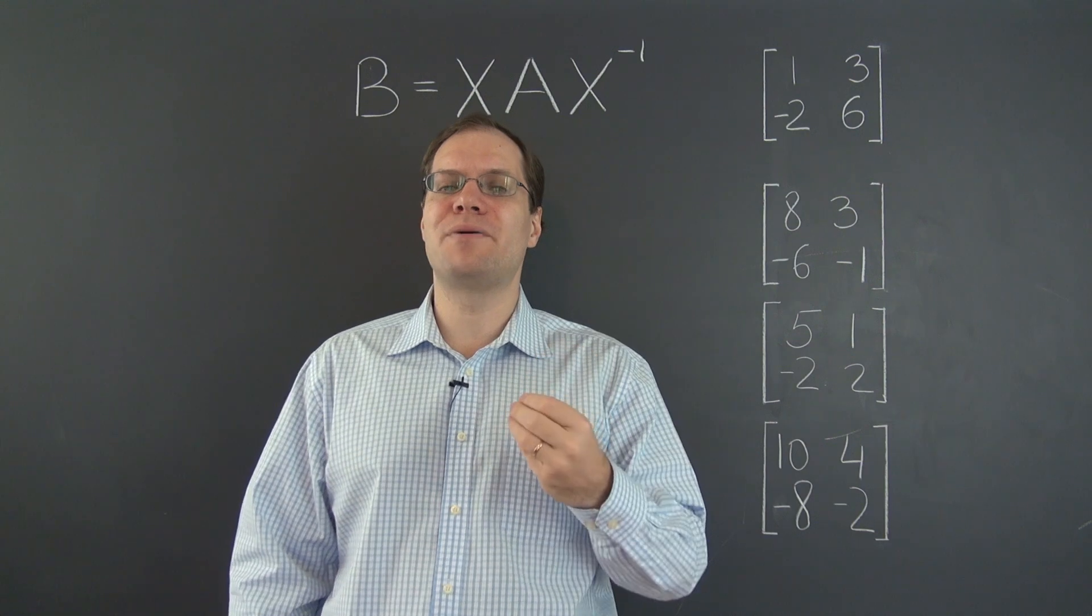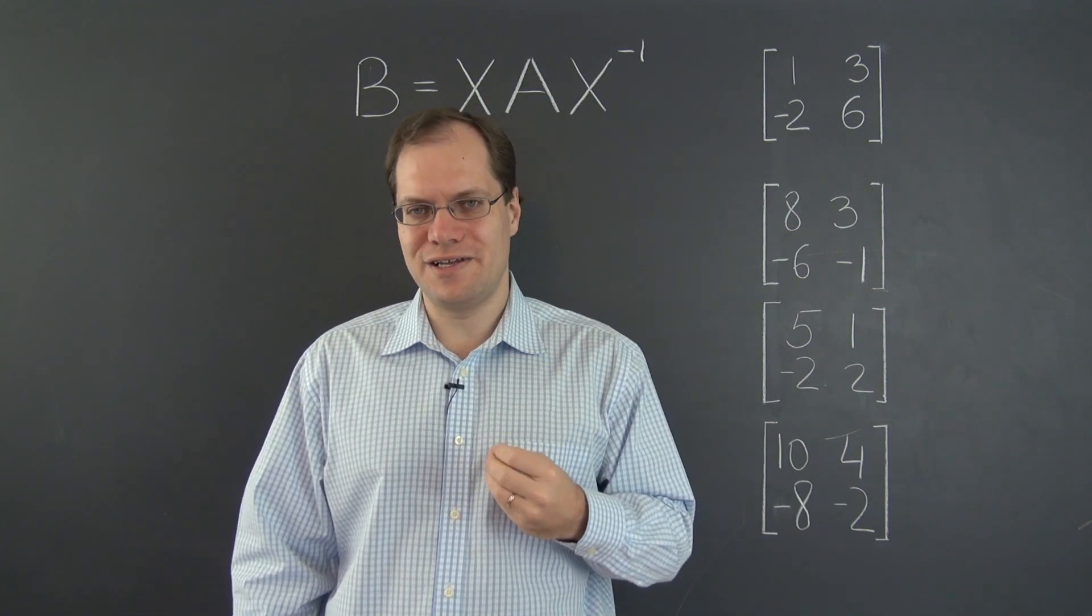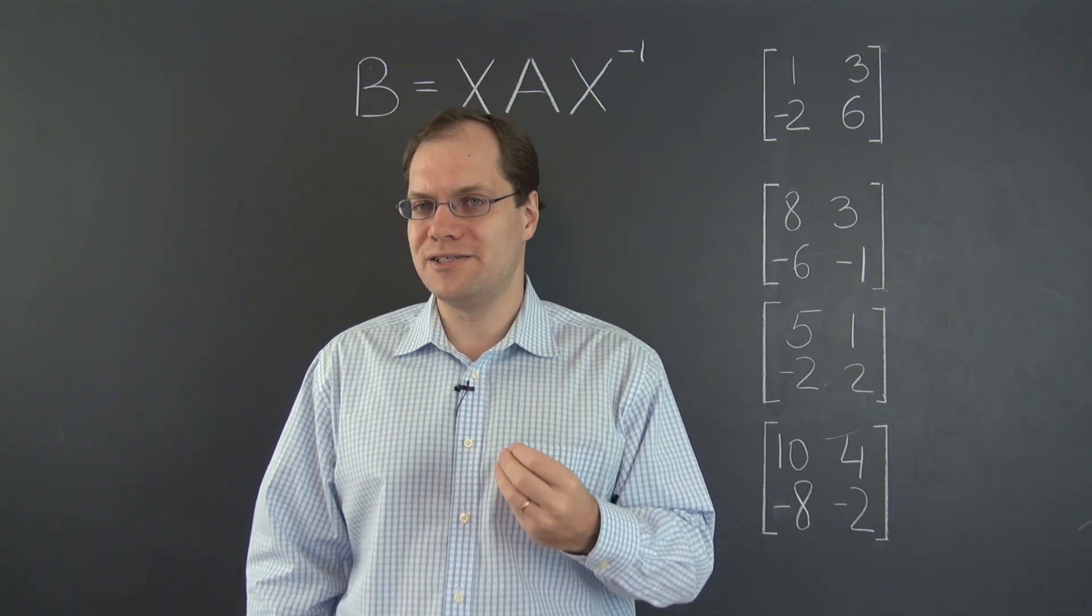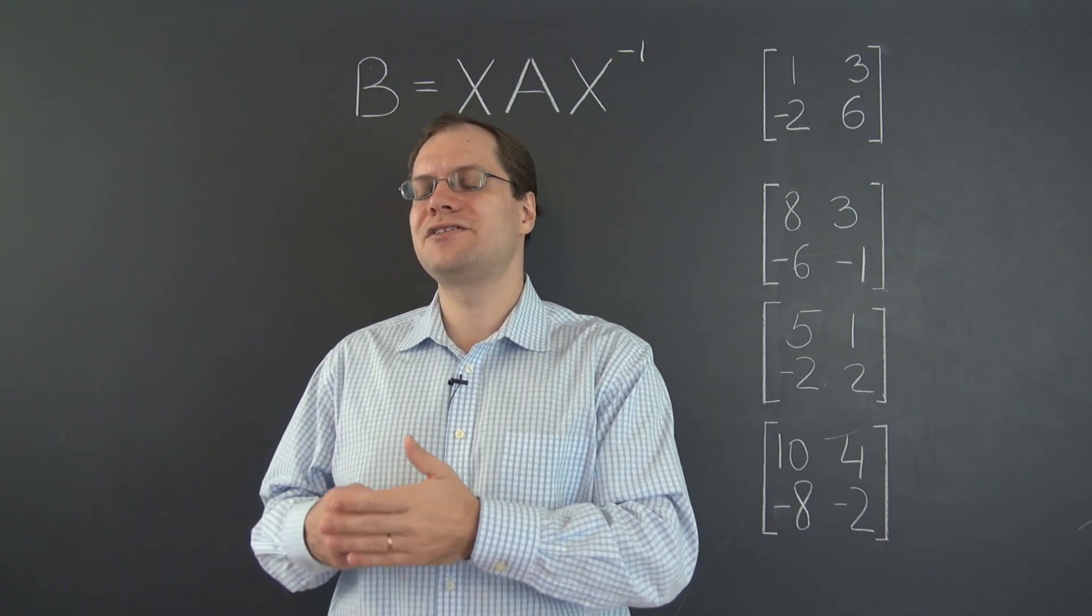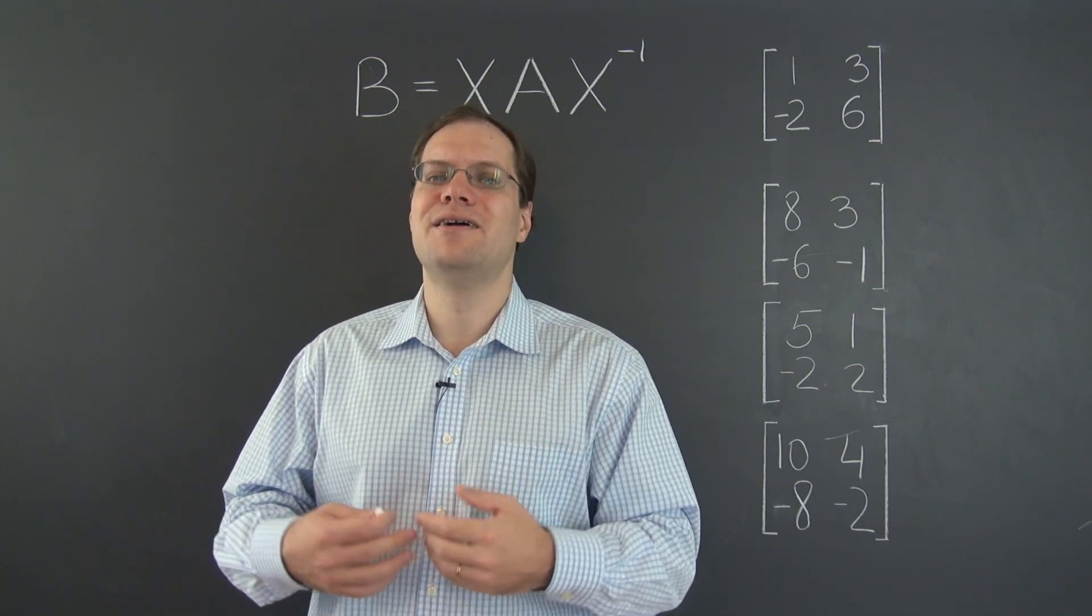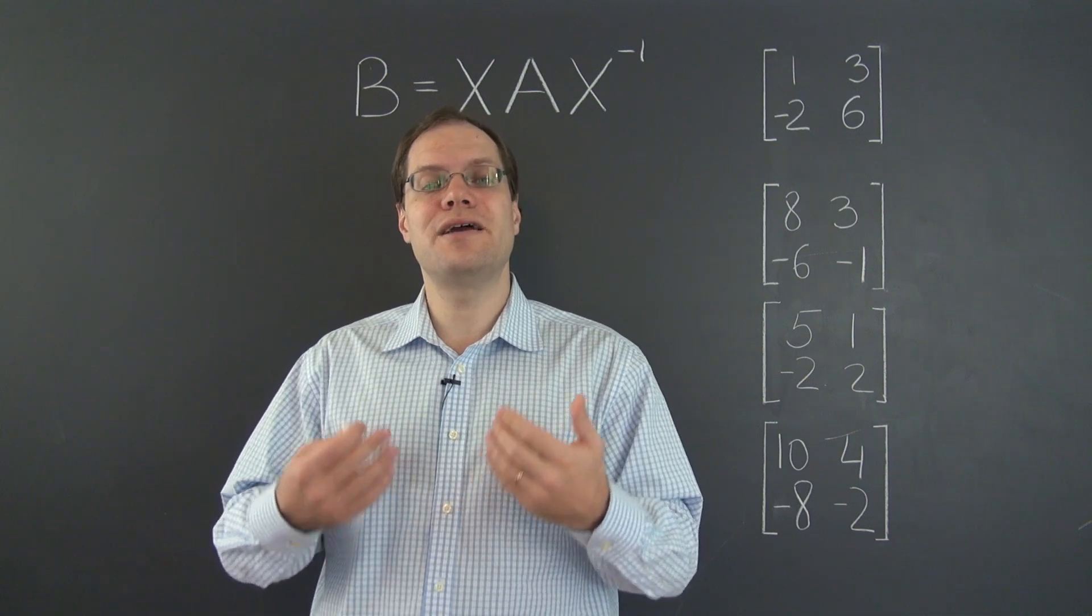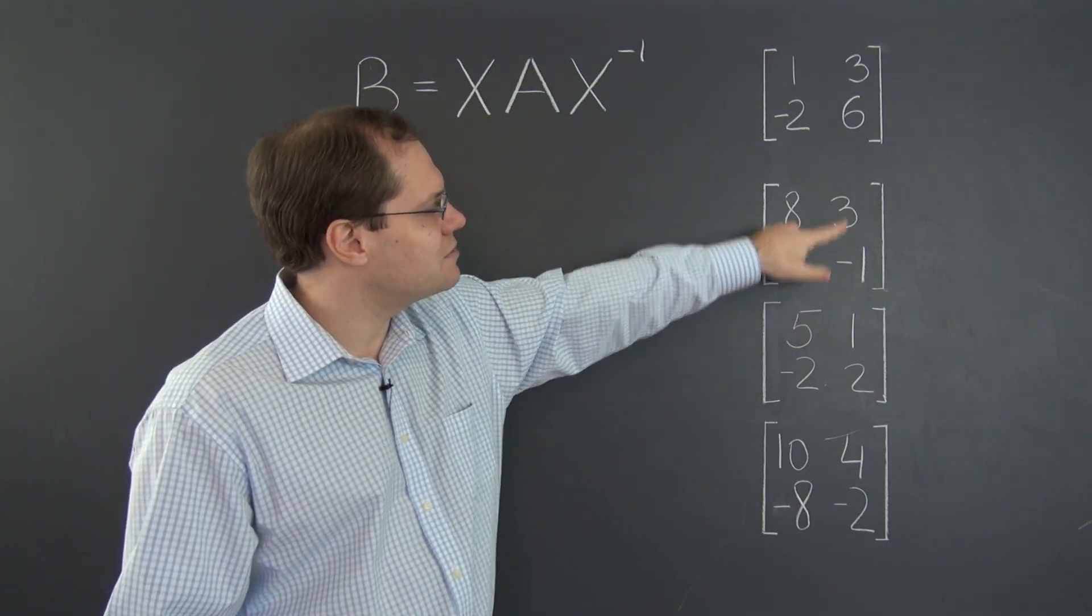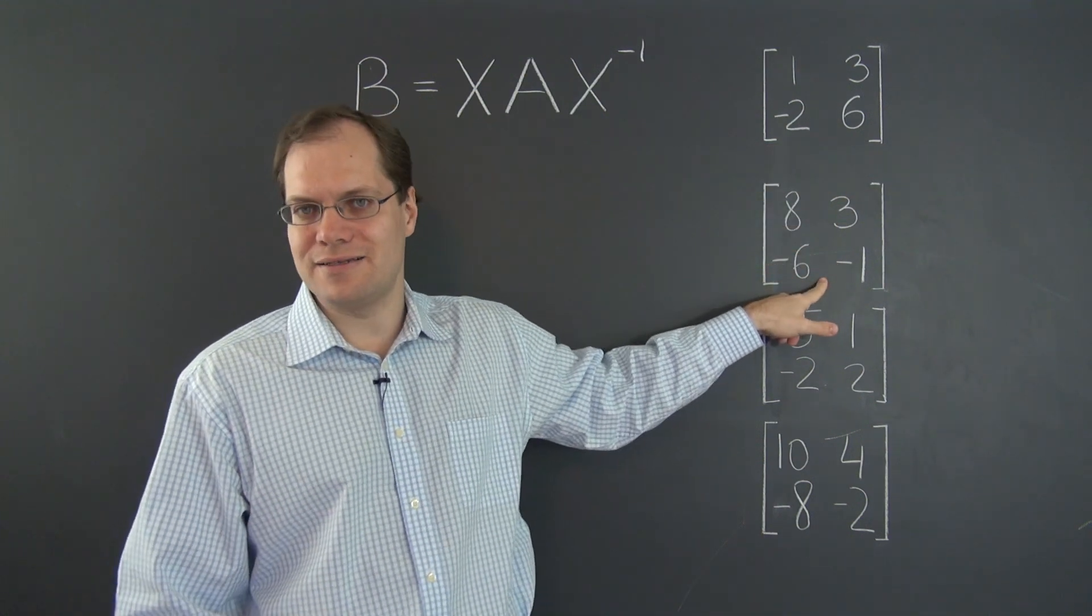So that's our property number one for this video. Two matrices related by a similarity transformation have the same trace. And I think this further justifies the use of the term similarity. After all, they're similar in many ways, including having the same trace. So let's see, the trace of this matrix is 7, just like this one, so this one is still a candidate.